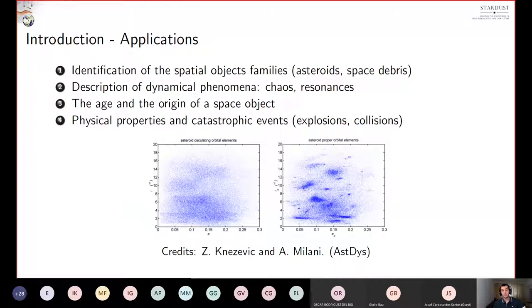As some benefits of the computation of proper elements, we can enumerate the identification of spatial objects in families, the analysis of different phenomena like chaos or resonances, the determination of the origin or the age of a space object, and last but not the least, the discovering of physical properties of target objects. This last point could be very important in case of the determination of catastrophic event that generated that objects. The image on the bottom of the page is a representative one when we talk about the application of proper elements. As you can see on the left plot, we have the portrait phase of eccentricity versus inclination in osculating elements, which is described by a cloud of points. Instead, on the right plot, where the proper eccentricity and proper inclination are shown, we can distinguish some groups or clusters that are formed.